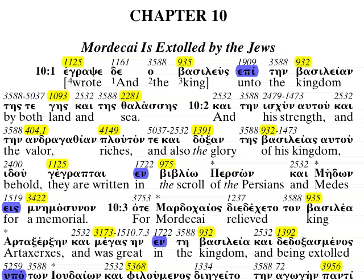This chapter now begins: 'Egrapsei ho vasolefs epi tin vasolein tis te gis kei tis thalasis.' The king — vasolefs — egrapsei, wrote. We have the root graph. Epi is the preposition; all the prepositions are highlighted in this chapter. He wrote unto the vasolein, the kingdom, by both gis — we have geology — and thalasis, the sea. Thalassic has to do with oceans or seas.